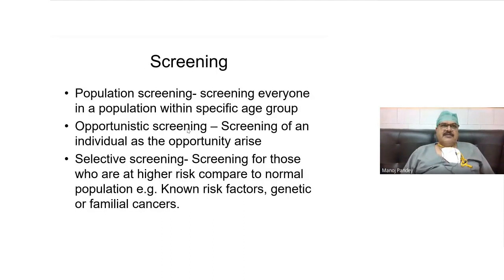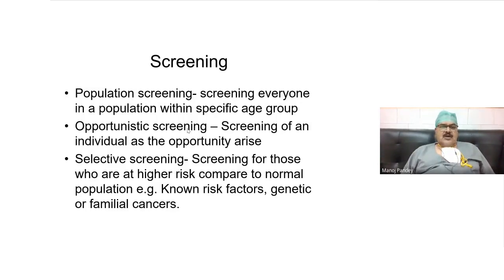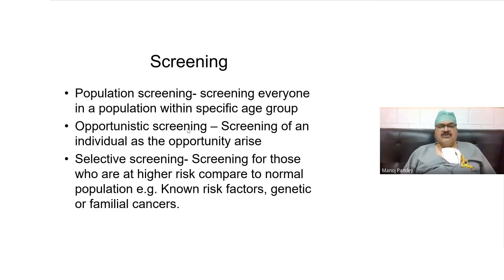Screening can be done on a population basis — called population screening — where everybody in a population within a specific age, genetic, or gender group is screened. Opportunistic screening is when an opportunity arises and an individual is screened. Selective screening is when you screen people who are at high risk compared to the normal population, like patients who have a genetic or family history of cancers or known risk factors.